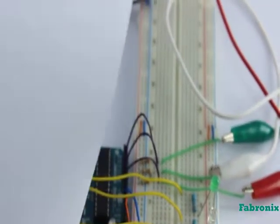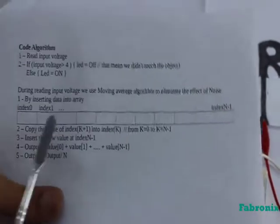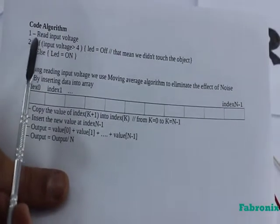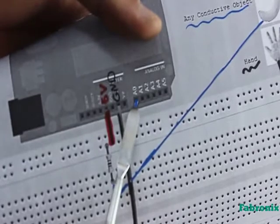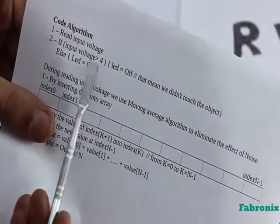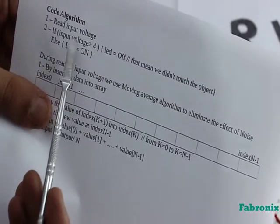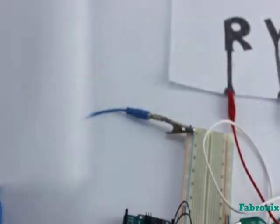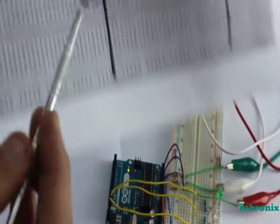A quick overview about the code algorithm. We read the input voltage at the terminal of the resistor and compare the voltage with 4 volts. You can use 3 volts according to the value of resistor and the conductive object. And if it's lower than 4 volts, that means we touch the conductive object and the LED turns on.